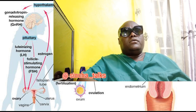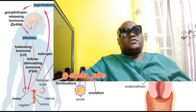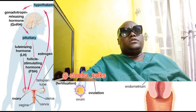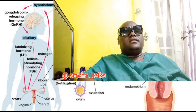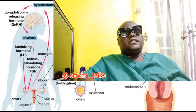FSH, or follicle stimulating hormone, stimulates the growth of follicles in the ovaries, each of which contains an immature egg. As the follicles grow, they produce estrogen, which triggers a surge in luteinizing hormone (LH). This LH surge then triggers ovulation, causing the mature egg to be released from the ovary.